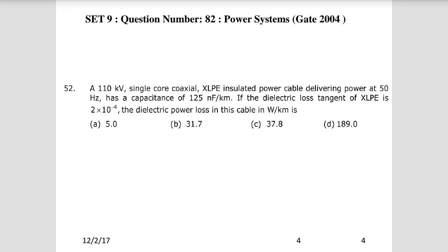Second question: a 110 kV single core coaxial XLPE insulated power cable delivering power at 50 Hz has a capacitance of 125 nanofarad per kilometer. If the dielectric loss tangent of XLPE is 2×10⁻⁴, the dielectric power loss in the cable in watt per kilometer is? XLPE means cross-linked polyethylene cable, an advancement of PVC cable with higher insulation strength for lesser thickness.